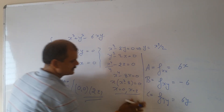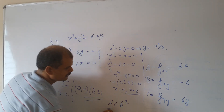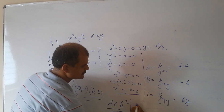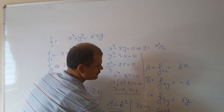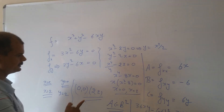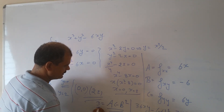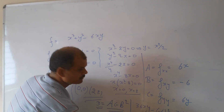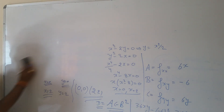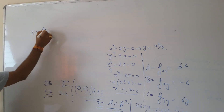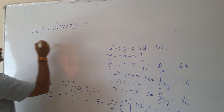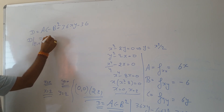The discriminant D = AC minus B² equals (6x)(6y) minus (−6)² = 36xy minus 36. At the point (0, 0): D = 36(0)(0) minus 36 = minus 36, which is negative. So (0, 0) is a saddle point — partial derivatives are 0 but it is not a point of maximum or minimum.